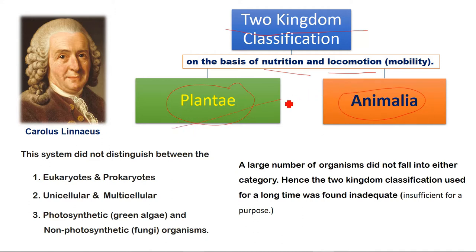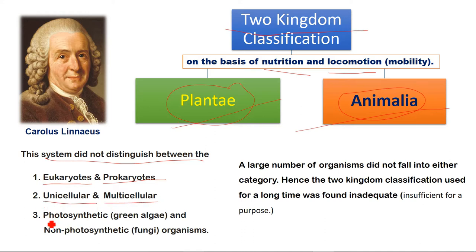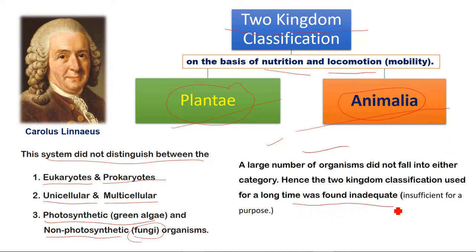The problem with this system was that we couldn't distinguish between eukaryotes and prokaryotes. Unicellular and multicellular organisms, photosynthetic and non-photosynthetic organisms were all mixed together. So many organisms did not fit properly into this system. This system was inadequate and insufficient for the complete purpose of classification.